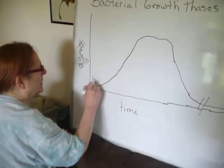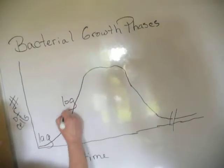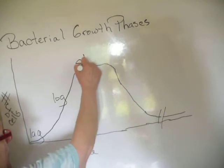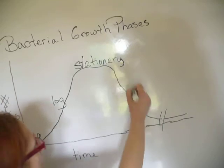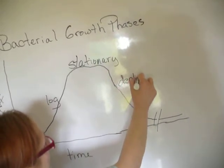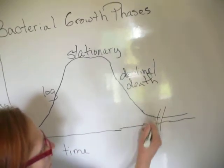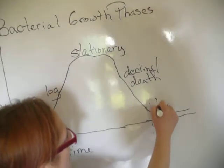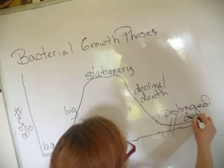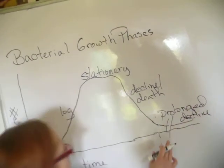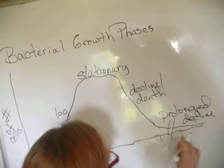I'll label these for you. This is the lag phase, this is the log or exponential phase, this is stationary, this is decline or death, and this part starting about here is prolonged decline.